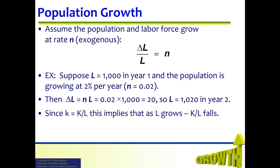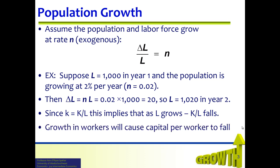Since little k, which is capital per worker, equals big K divided by big L, this implies that as big L grows, big K divided by big L must fall. In other words, growth in workers will cause the capital per worker to fall.